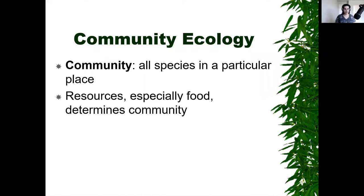Just to reiterate: communities are all species within a particular place. Population is going to be all of one species in a particular place. A community will be all species — many species in a particular place. The makeup of the community is determined by the type of food available, what type of things eat what type of food, and what type of food is available.